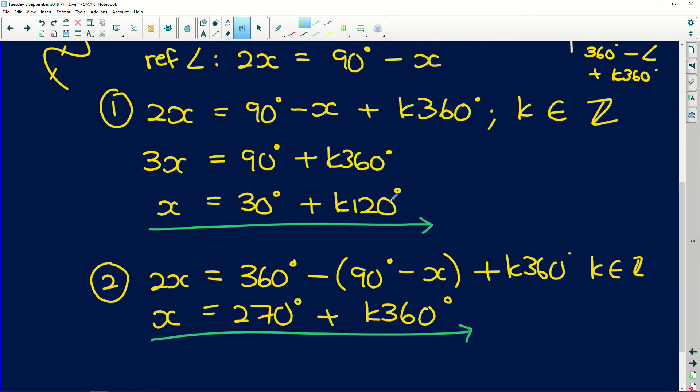So from this here what happens? If we substitute k equals 0 we get x equals 30 degrees. If we substitute k equals 1 we get 30 degrees plus 120 which is 150 degrees. And if we substitute k equals 2 we get 30 degrees plus 240 degrees which is 270 degrees. And those all fall within our boundaries. If we went any higher or lower they would fall without them.